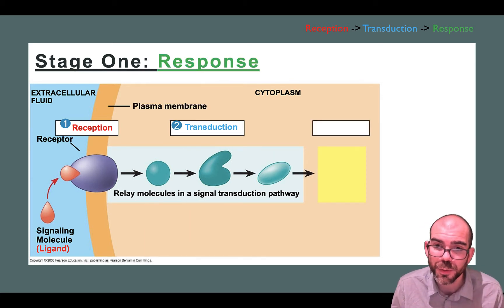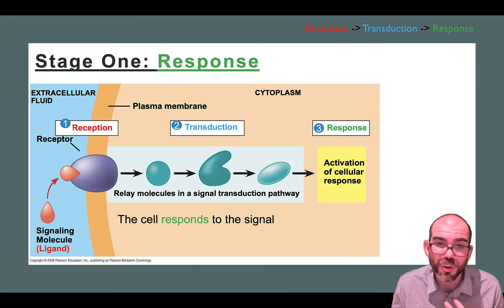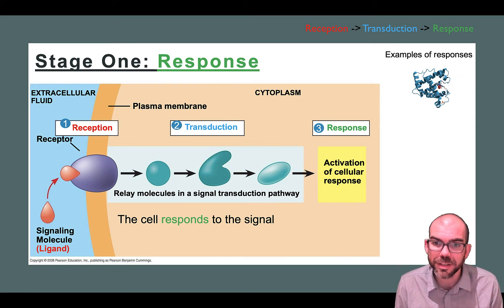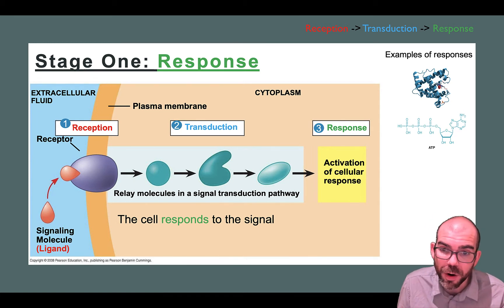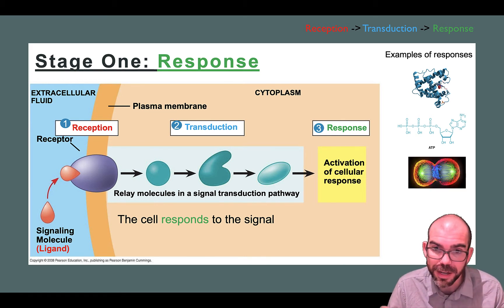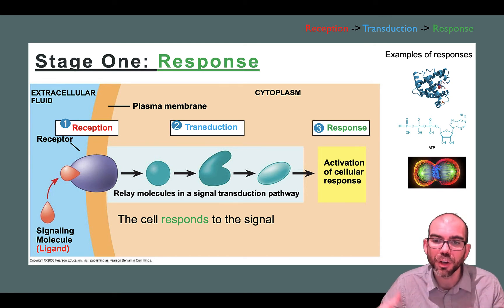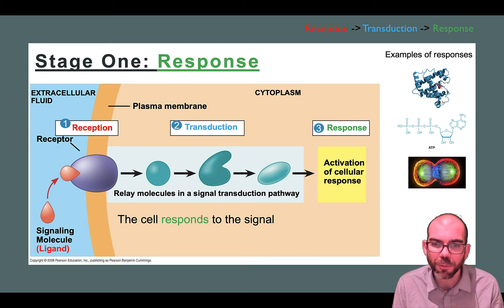Our last step is a response. As we go through transduction, that's going to stimulate some kind of cellular response. The cell can respond to the signal in a huge variety of ways. One example is to produce a protein — the signal can go to the nucleus to trigger DNA being read and used to manufacture a protein. It could also be to generate more ATP if the body needs more energy, or to stimulate mitosis — using a cyclin to stimulate a cell to go through its cell cycle past the checkpoints and divide. This is another way cells regulate how frequently cell growth occurs.